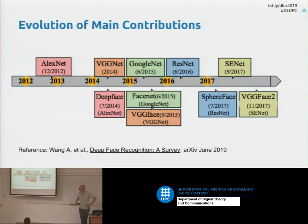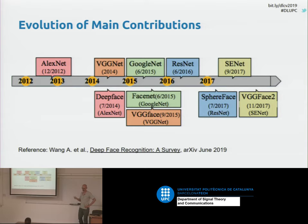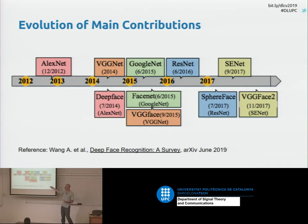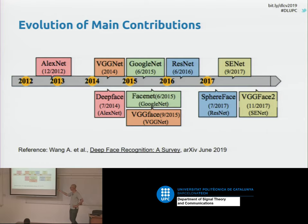This is an overview of the main contributions in the field. It starts with using deep learning — more or less at 2013 with the appearance of AlexNet. The first systems were using AlexNet or VGGNet as classifiers for closed-set face recognition. At the same time, there were other works that used these networks for extracting feature vectors and then applying them for verification. For instance, DeepFace in 2014, FaceNet in 2015 and VGGFace, SphereFace in 2017 and VGGFace2. These solutions are based on the basic classification network but used as a feature extractor.